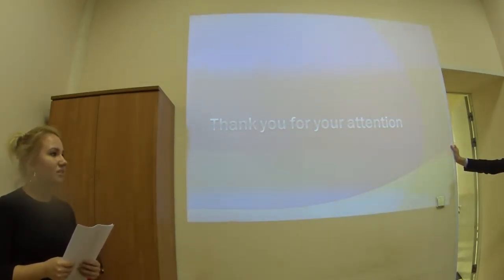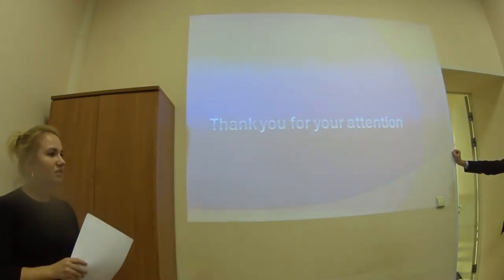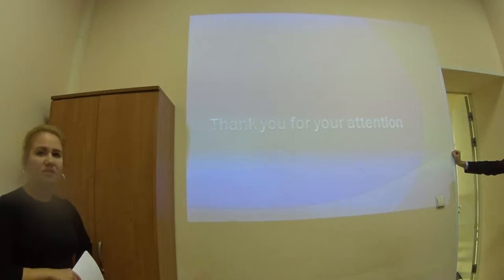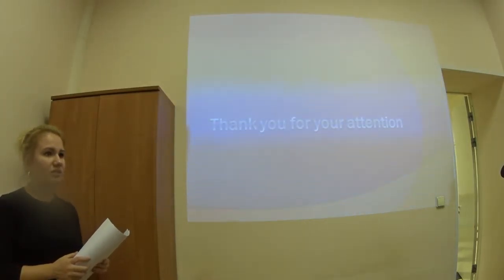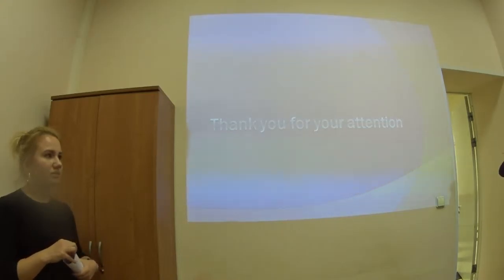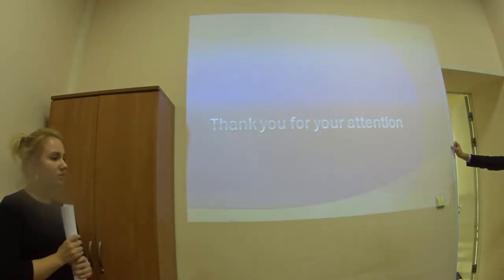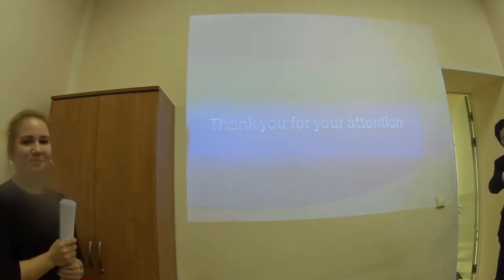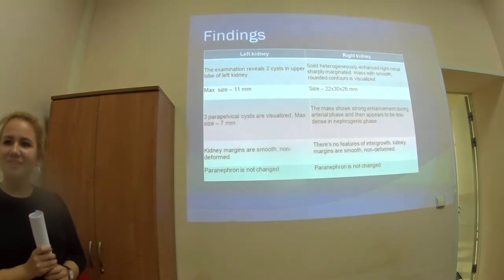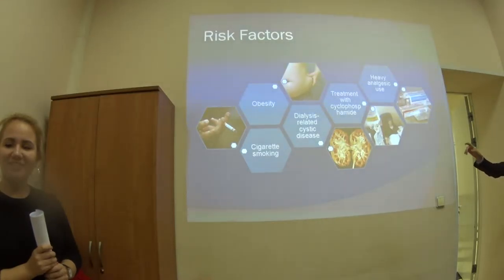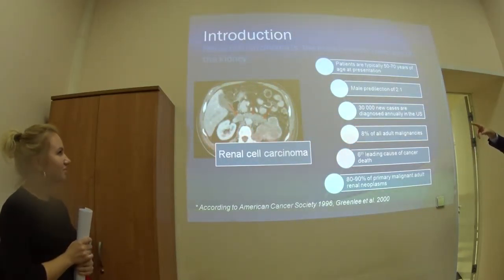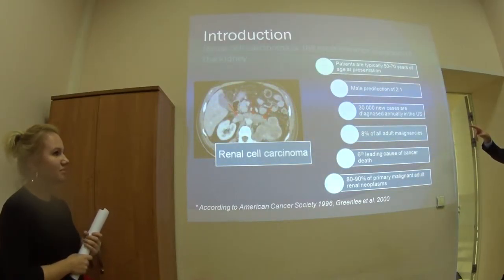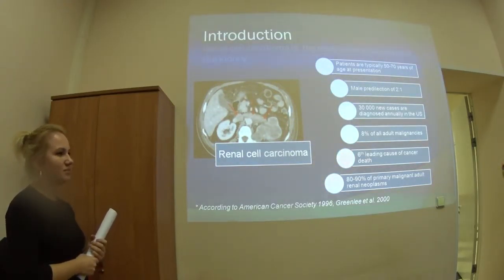For such tumors as Alina described, chemotherapy is not indicated — it is always surgery. The approach depends on the type and size of the tumor, where it is located, and what other parts of the body are involved. For example, on the second slide, there is a very rare case of invasion into the renal veins, which you can see with red stripes — this type of tumor may be more problematic.